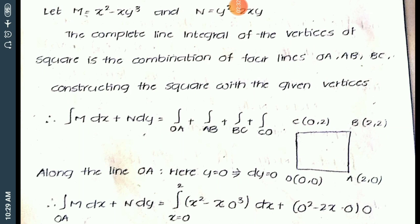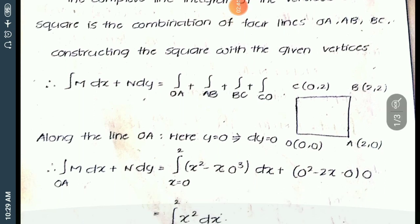So the integral over C of M dx + N dy equals the integral over OA plus integral over AB plus integral over BC plus integral over CO. Now I am taking the first line integral along OA.